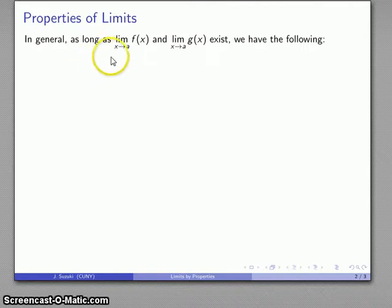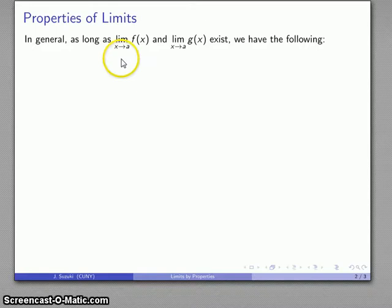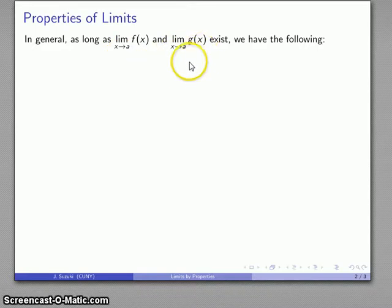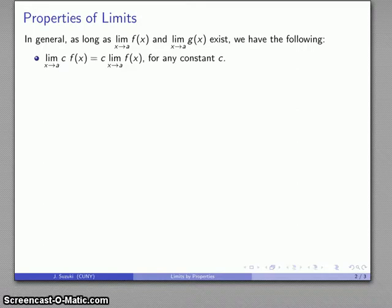Suppose I have somehow obtained the limit of f of x as x gets close to a, and the limit of g of x as x gets close to a. So let's say I have a couple of limits. Well, if I have these limits then I also have the following facts.